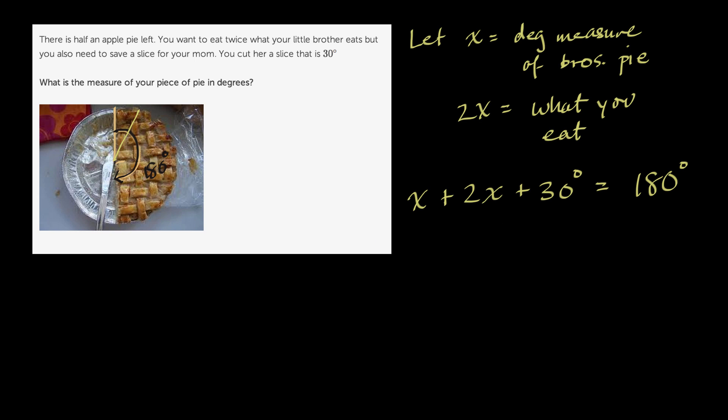And just to visualize it, let me draw it down here where it's easier to see it. We have half a pie that we're dealing with. We're going to save 30 degrees for our mom. So that's 30 degrees right over there. Your brother is going to eat some amount. So that is x. And then you're going to eat twice that amount. So that is 2x. x is the measure of this angle, and then 2x is the measure of that angle. So you see that 30 degrees plus x plus 2x, or x plus 2x plus 30 degrees, is going to be equal to 180 degrees.